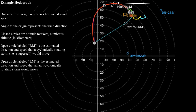The open circle labeled LM is the estimated direction that an anticyclonically rotating storm would want to move — also just an estimate. When we talk about an anticyclonically rotating storm, we mean a supercell rotating clockwise in the northern hemisphere. You don't often see supercells rotating in that direction. Left-moving supercells — those rotating clockwise — are possible, but they're usually short-lived because this storm typically moves more northerly, drawing in cooler, more stable air from the north, and as a result they usually don't last very long.